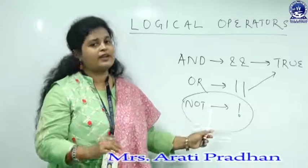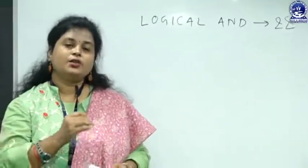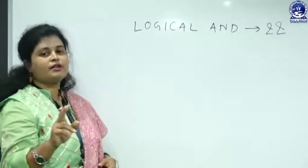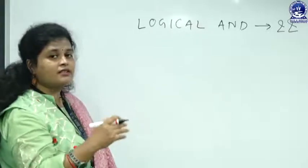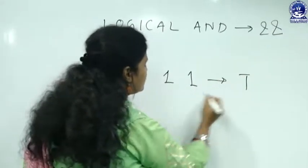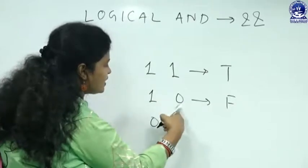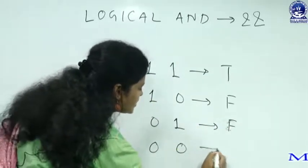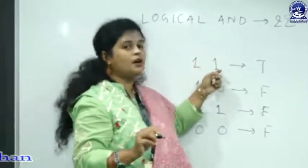Logical AND is used to check two or multiple conditions and it returns true only if all the conditions are true. For example, using 1 and 0 to represent true and false: if two operands are both 1, it returns true. If any operand is 0 — whether it is 1,0 or 0,1 — the value will be false. Logical AND returns true only when both operands are true.